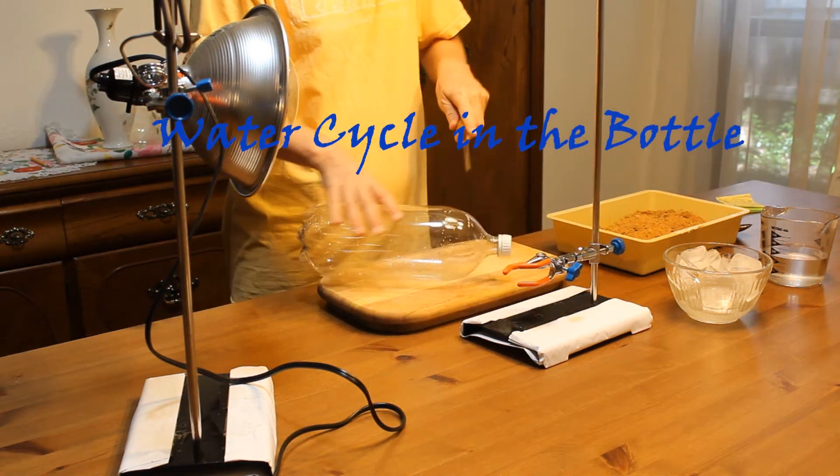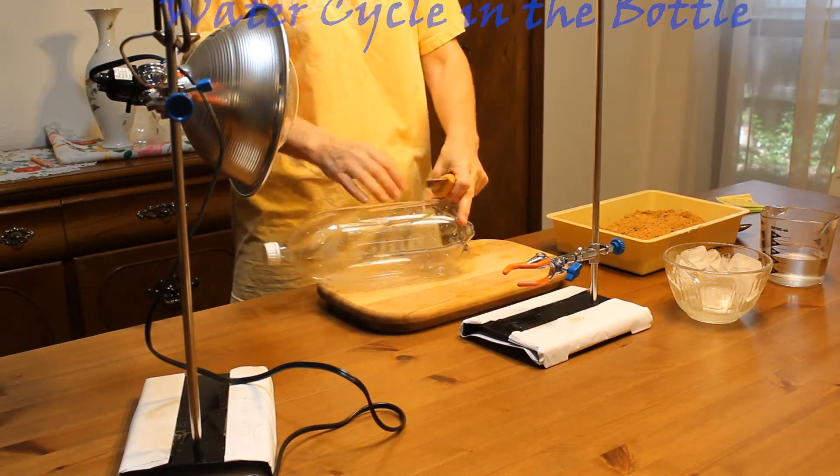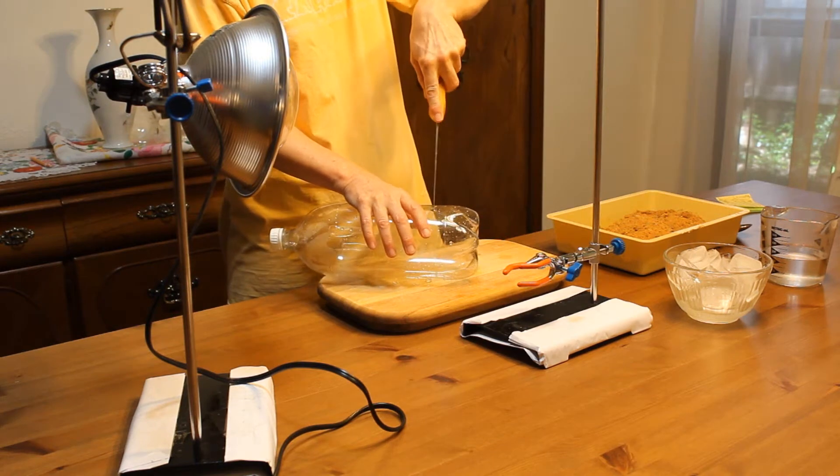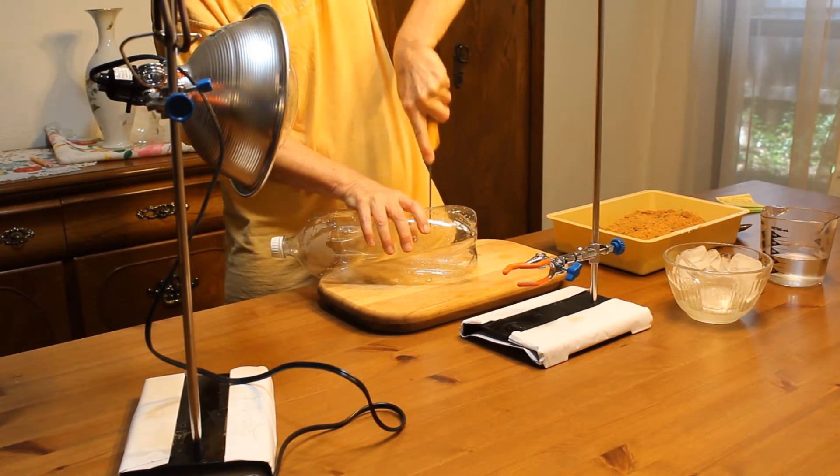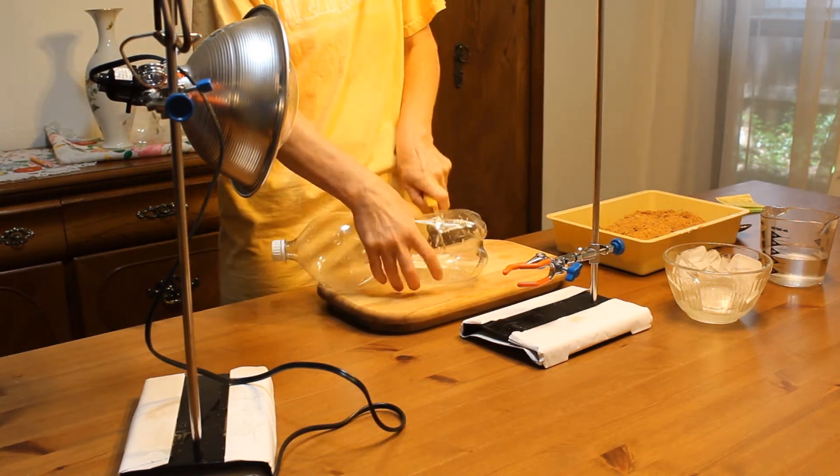Water cycle in the bottle. In this lab we construct a model to observe the water cycle. We use a 2-liter plastic water bottle and we cut off the bottom part.